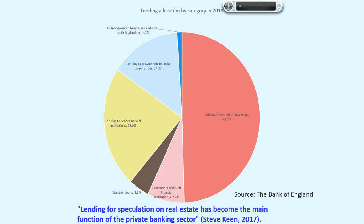Unincorporated businesses — those that don't have a separate legal identity from their owners, such as sole traders and partnerships — account for approximately 1% of total lending by financial institutions. So lending to non-financial businesses, both corporate and unincorporated, is only 15.5% of total lending in the UK economy, which caused Steve Keen to say that lending for speculation on real estate has become the main function of the private banking sector.